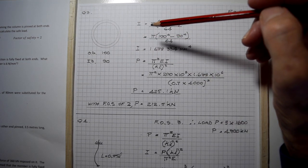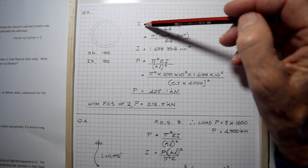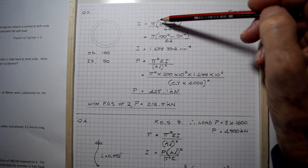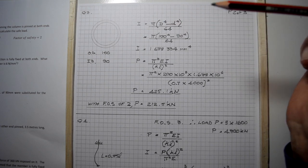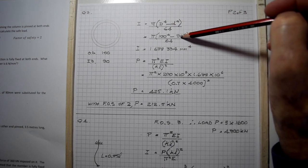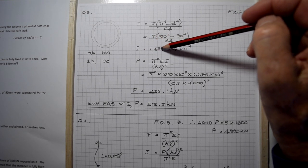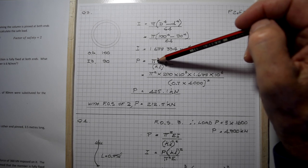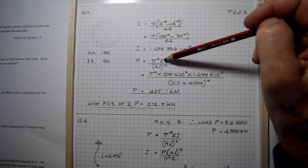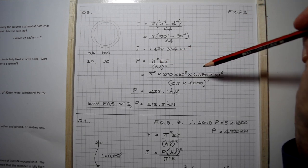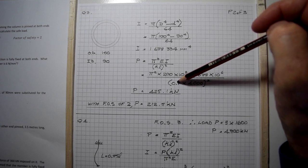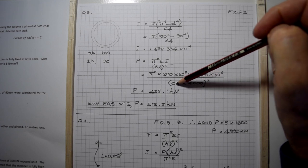We work out the moment of inertia about an axis of this tube - it could be any axis because it's a circle. The formula is pi d to the fourth minus little d to the fourth over 64. Big D is outside diameter, little d is inside diameter, giving an inertia of 1,688,334 millimeters to the power of four.